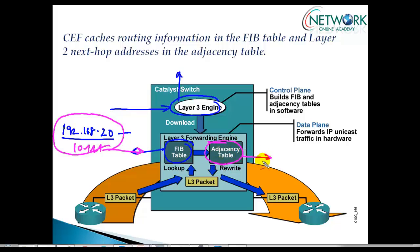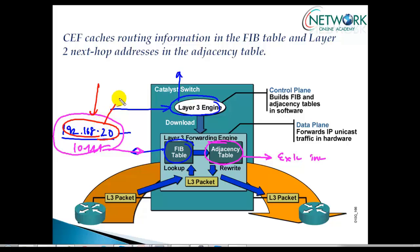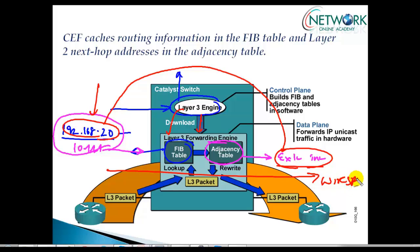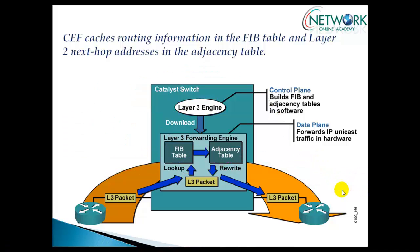This information is maintained in the FIB table — the Layer 3 forwarding engine. It also maintains the adjacency table, which holds exit interface information. Whenever any packet arrives for a destination, it doesn't perform a lookup again. The lookup is pre-built — the router simply forwards the packet out of the exit interface without any software processing, because it is pre-built. This provides wire-speed performance and ensures packets move through Layer 3 devices much faster than normal routing.